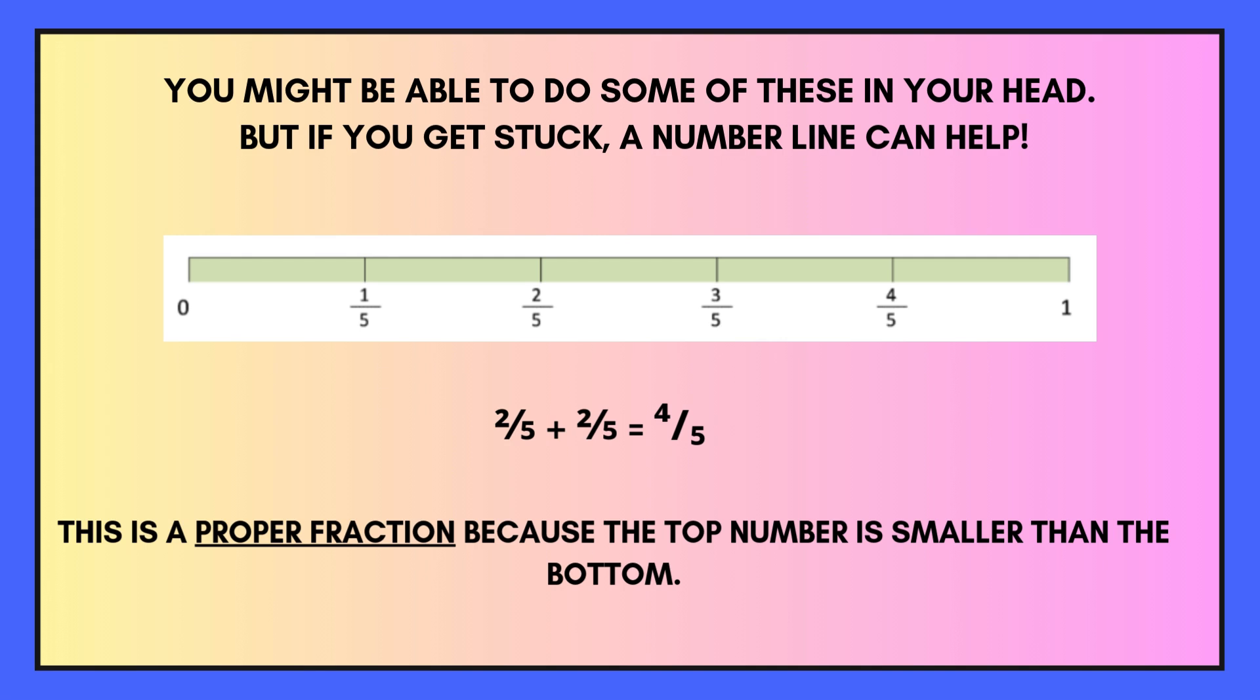So here we have a number line and it's been split up into 5, which means it represents 5ths. We can use it to add 2 fifths plus 2 fifths. If you follow the number line and go to 2 fifths and then add another 2 fifths, you come to 4 fifths. Now 4 fifths is a proper fraction because the top number is smaller than the bottom.